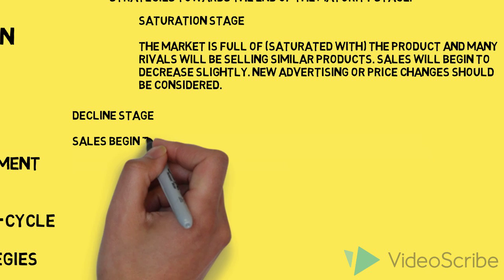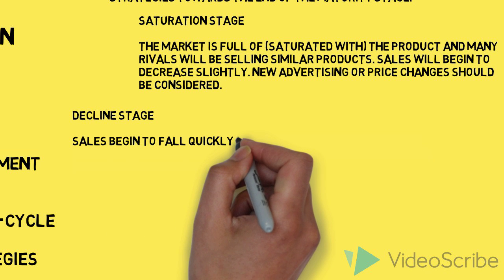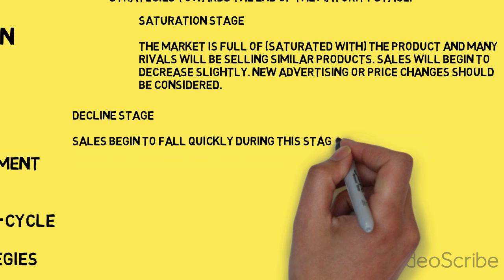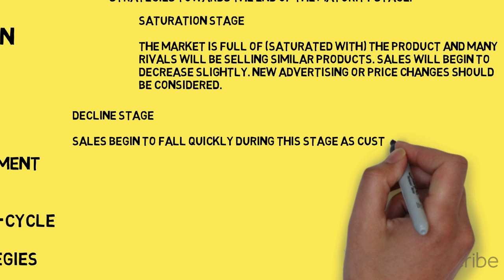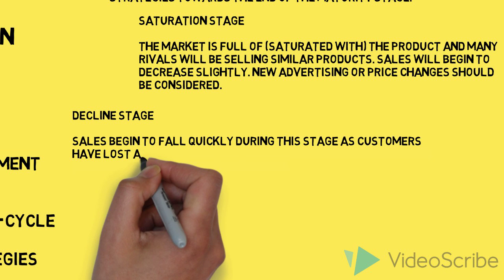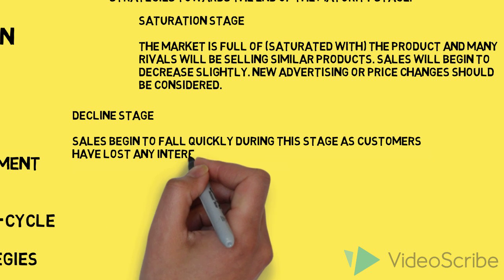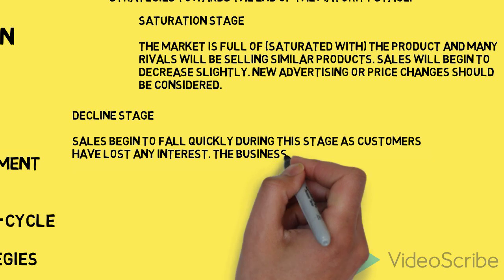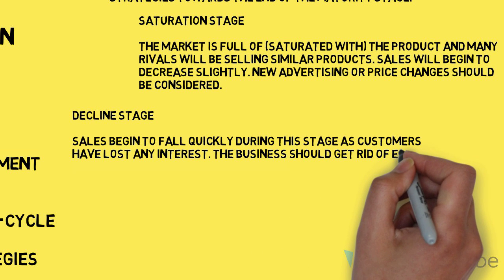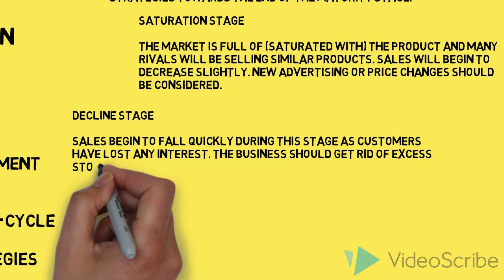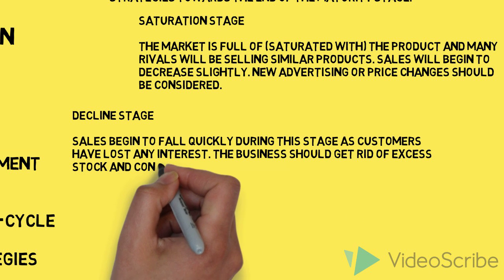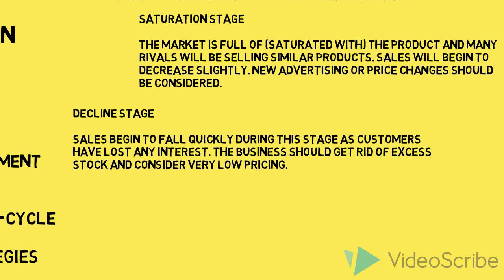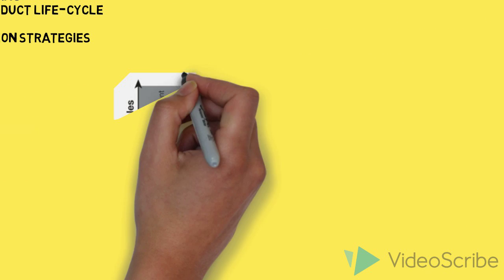Finally, products end up in the Decline stage. During this stage, sales fall rapidly. Customers are usually dissatisfied with the product or have moved on to something else. The business may consider very low pricing in order to get rid of any excess stock.